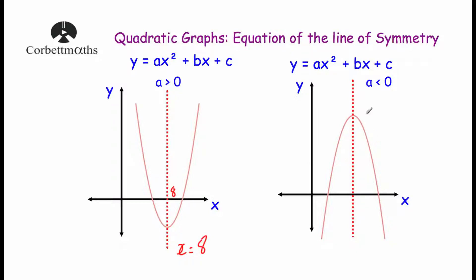And this graph - if the line of symmetry passed through the number 11 on the x-axis, the equation of the line of symmetry for this parabola would be x equals 11. So the line of symmetry of a quadratic graph will be a vertical line, and to find its equation all we need to do is find where that vertical line crosses the x-axis, and then it would be x equals that number.